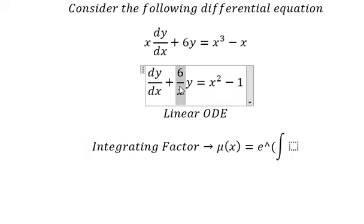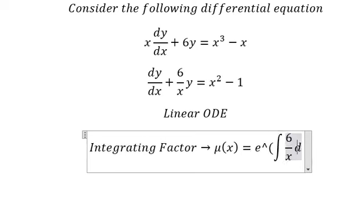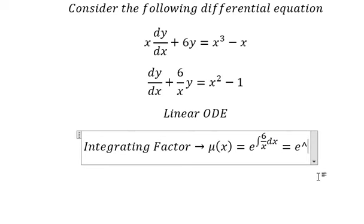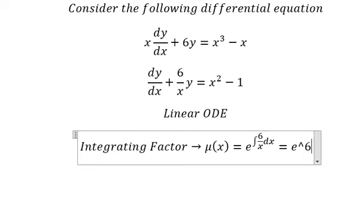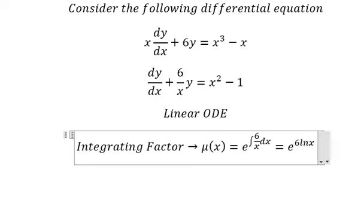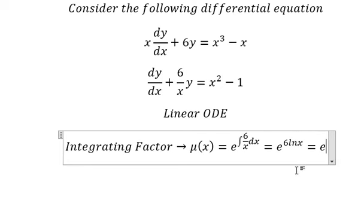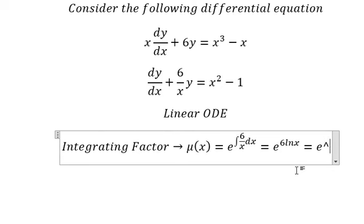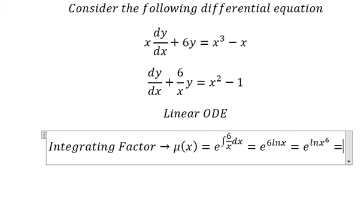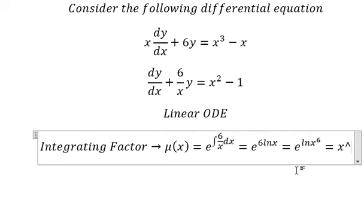I will put this one in here, and we have 6 ln X. Later, that 6 goes inside our natural log, and we have X to the power of 6. That means we need to multiply both sides by this one.